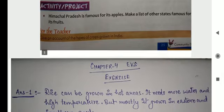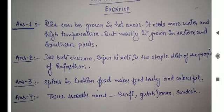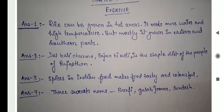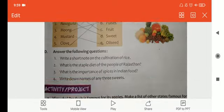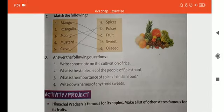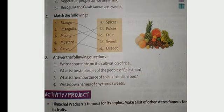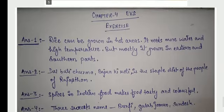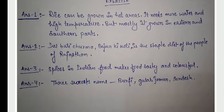Question two: What is the staple diet of the people of Rajasthan? Answer: Bajra and dal are the staple diet of the people of Rajasthan. Question three: What is the importance of spices in Indian food? Answer: Spices are important in Indian food —